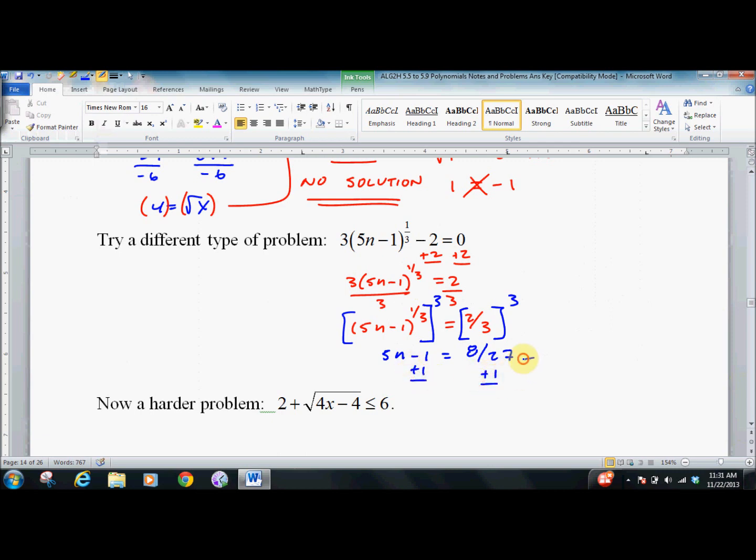Add 1 to both sides. 5n equals 35 over 27. n equals 7 over 27.